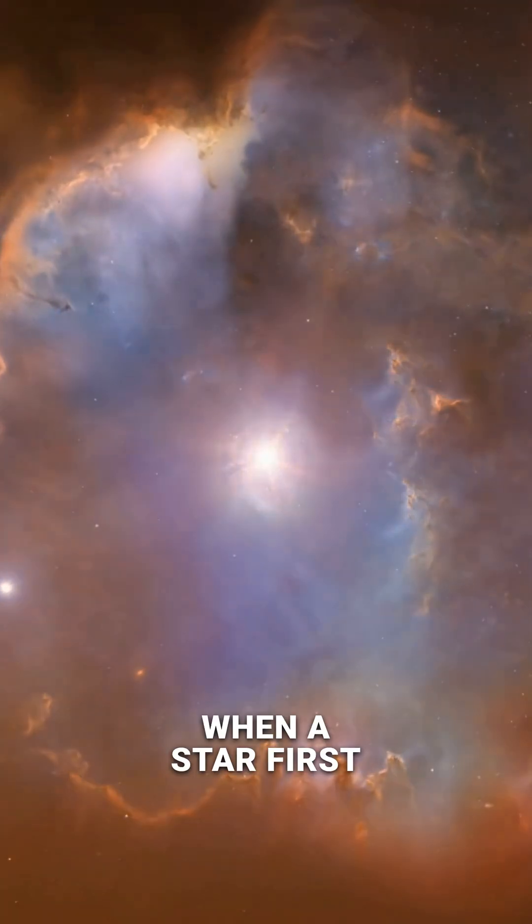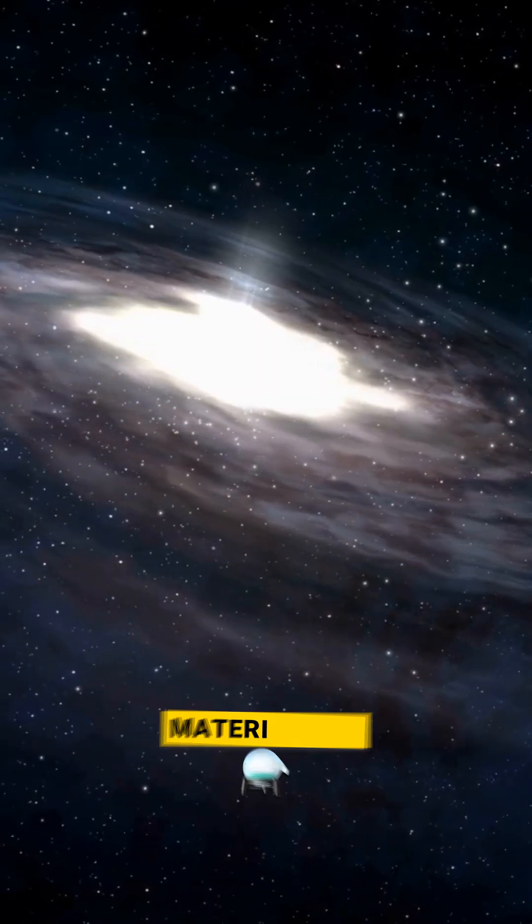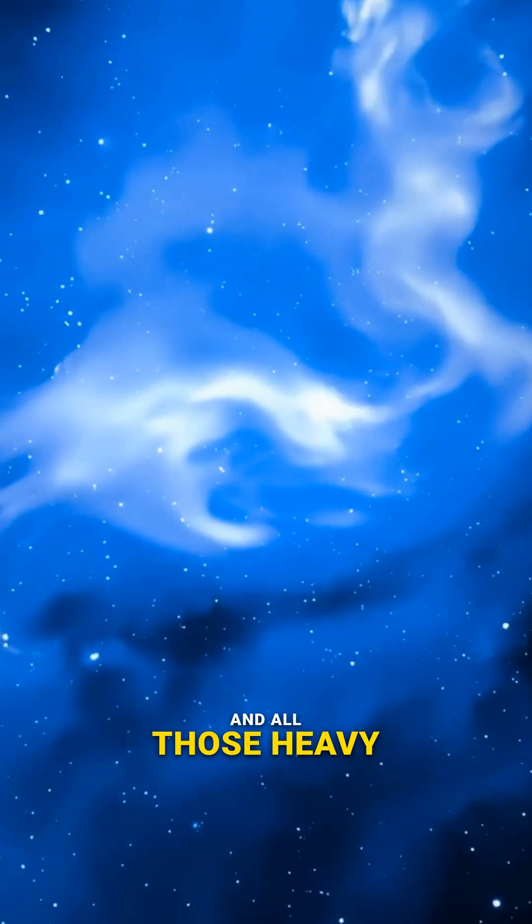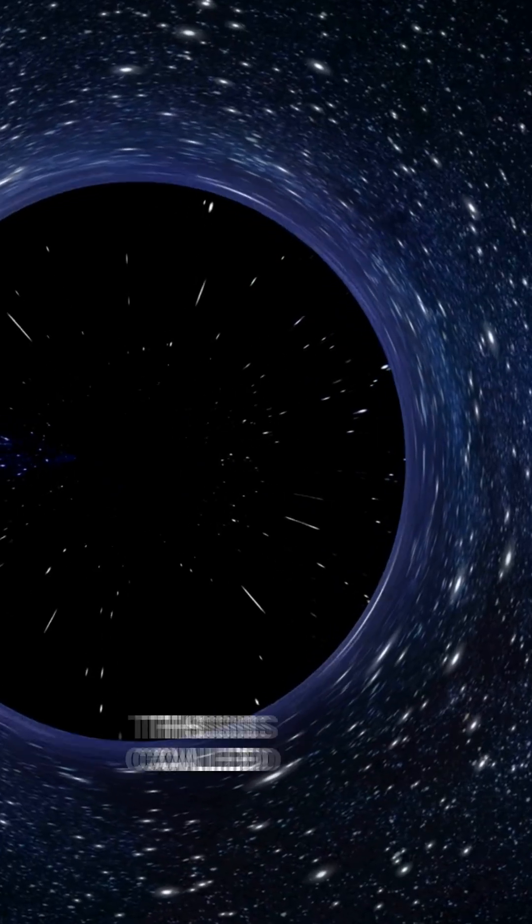Forget the big galactic collisions for a moment and zoom right in on a single newborn star. When a star first forms, it's surrounded by a massive flat swirling pancake of leftover material - gas, ice, and all those heavy elements created by the dead monster stars we talked about. This is called a protoplanetary disk.